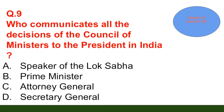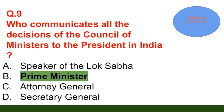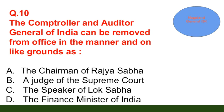Question number 9: Who communicates all the decisions of the Council of Ministers to the President in India? Option A: Speaker of the Lok Sabha; option B: Prime Minister; option C: Attorney General; option D: Secretary General. The correct answer is option B — Prime Minister.